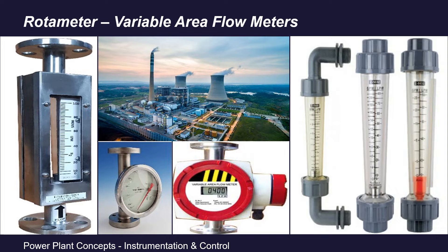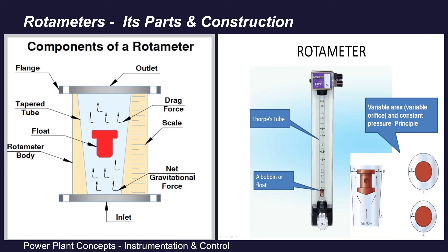Our first and foremost question is: what is a rotameter? We can say a rotameter is a variable area flow meter because in this meter the area of fluid flowing is varying as the float moves up or down in a tapered tube. It measures volumetric flow of liquid or gas. It is a reliable, simple, and low-cost flow measuring instrument. Sometimes these rotameters are also called gravity flow meters, mechanical flow meters, or variable area flow meters.